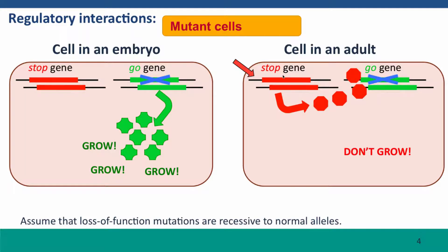What about mutations in the go gene? In the embryo, the go gene is on, but there's still one functional copy. If we assume that loss-of-function mutations are recessive, the cell will grow normally, though if half the protein produces slightly slower growth, this cell might grow more slowly. In the adult, the go gene is turned off by the stop gene, so the cell isn't going to grow anyway. It doesn't matter what the genotype of the go gene is when that gene is not expressed.